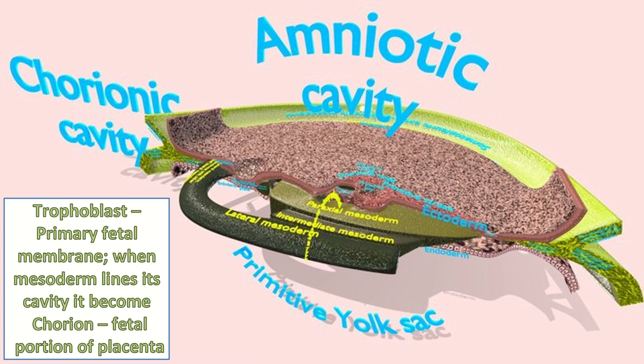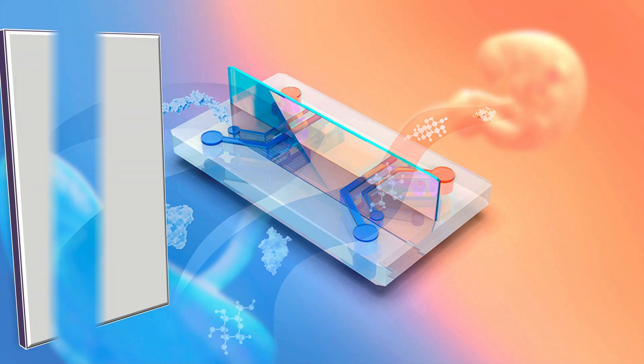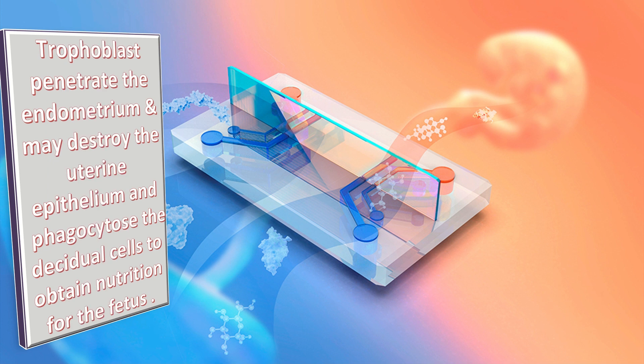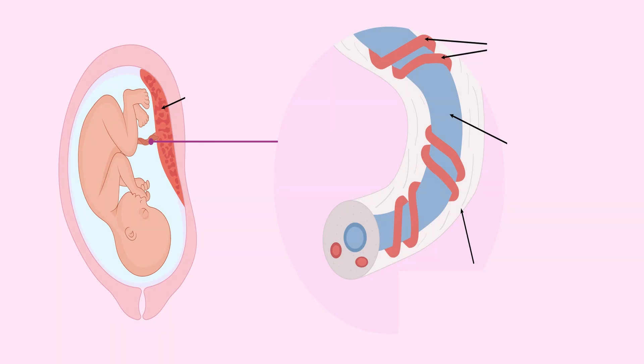When the mesoderm lines its cavity, it becomes the chorion, which is the fetal portion of the placenta. The trophoblasts penetrate the endometrium and may destroy the uterine epithelium and phagocytose the decidual cells to obtain nutrition for the fetus.